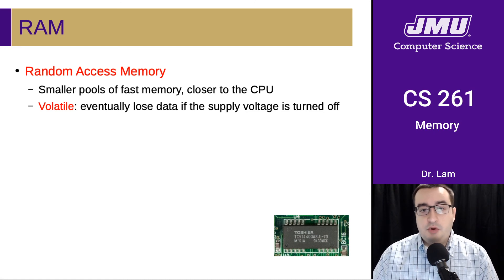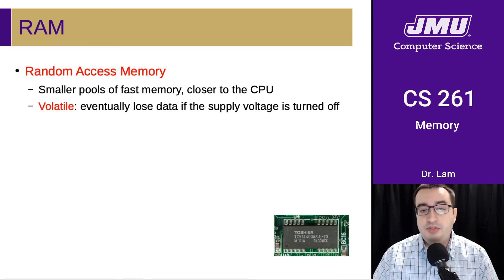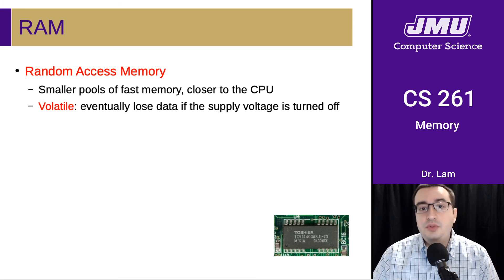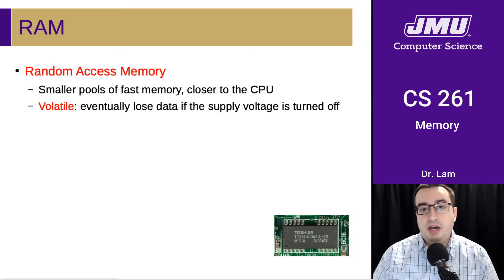Let's talk about RAM, or random access memory. These are the small pools of very fast memory close to the CPU, at the very top of our memory hierarchy. All of these are volatile, meaning they will lose data if the electricity turns off. So when your computer loses power, these pools of memory will reset.